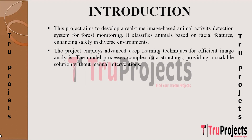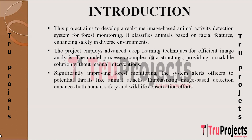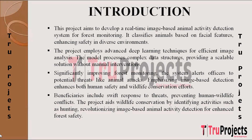The model excels in processing large sets of image data. Unlike traditional methods, it efficiently analyzes images without manual interventions, offering a scalable solution for handling complex data structures. This project addresses the need for improved monitoring services in forest regions, emphasizing image-based animal activity detection. The system enhances human safety by alerting forest officers to potential threats such as animal attacks or wildlife encroachment into human living areas and agricultural lands. Beneficiaries include both human safety and wildlife conservation efforts. Timely alerts enable swift responses from forest officers, preventing human-wildlife conflicts and contributing to wildlife conservation by identifying activities like hunting. Overall, this project has the potential to revolutionize image-based animal activity detection, providing a comprehensive solution for monitoring and safeguarding both human and animal populations in forest regions.